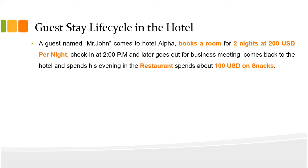You can see highlighted words in orange: 'books room,' 'two nights at 200 USD per night,' 'checks in at 2 PM,' 'restaurant,' and '100 USD on snacks.' I'm highlighting key pieces of information which will be very useful later on when we analyze the data flow.